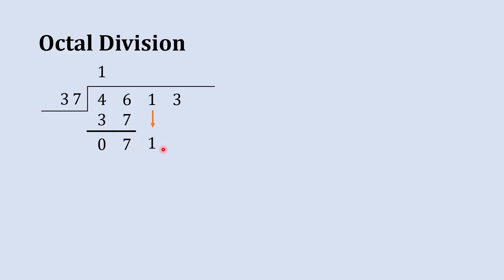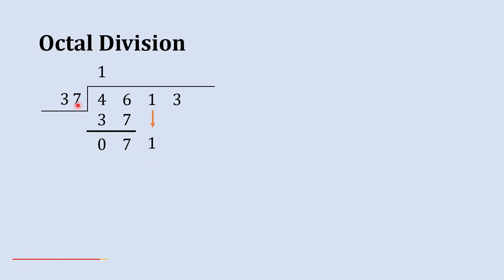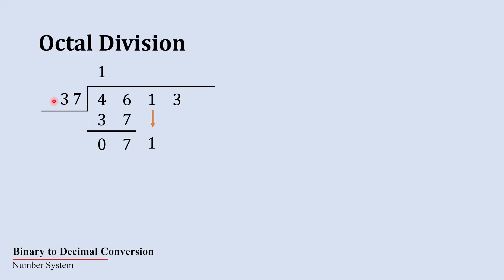71 is larger than 37, so we can divide 71 by 37. But to do that we need the table of 37. It's always easy in division if you have the table of the number you are dividing with. I'll show you a method to quickly prepare the table of 37 in octal.